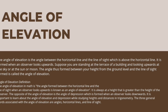Definition of angle of elevation: The angle of elevation in math is the angle formed between the horizontal line and the line of sight when an observer looks upward. It is always at a height that is greater than the height of the observer. The opposite of the angle of elevation is the angle of depression, which is formed when an observer looks downward. It is important to learn about the angle of elevation and depression while studying heights and distances in trigonometry.